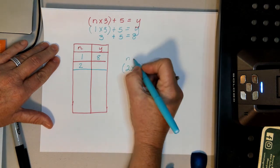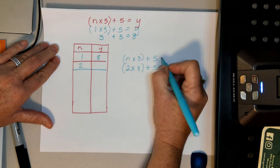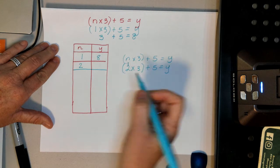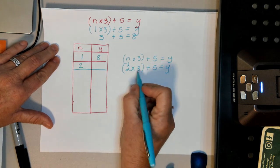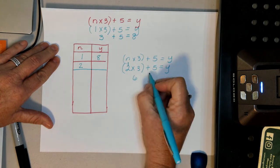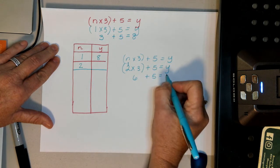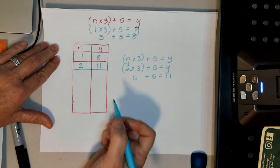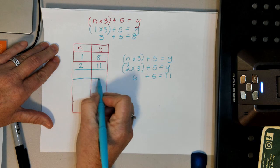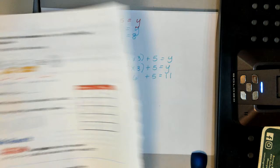Because the equation, once again, was n times 3 plus 5 equals y. And we put this 2 here for the n, put that here. So I'm going to write the 1. So y is 11. And you would just keep doing this with different numbers.